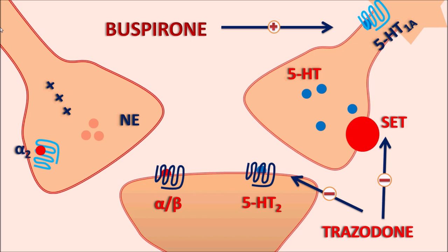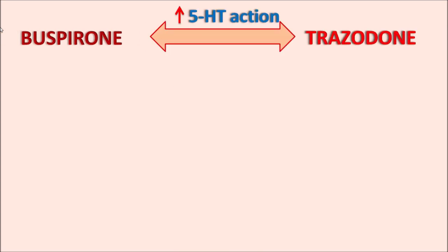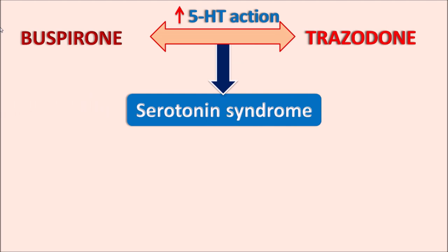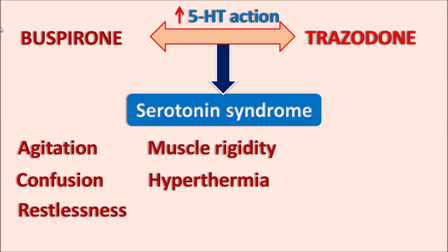When buspirone is given along with trazodone, we observe increased serotonin levels within the body, which leads to serotonin syndrome. This syndrome is observed with many drugs that increase 5HT levels. When 5HT levels are excessively increased within the CNS, it leads to symptoms such as agitation, confusion, restlessness, muscle rigidity, and hyperthermia.